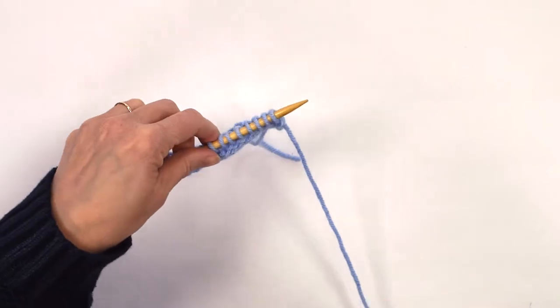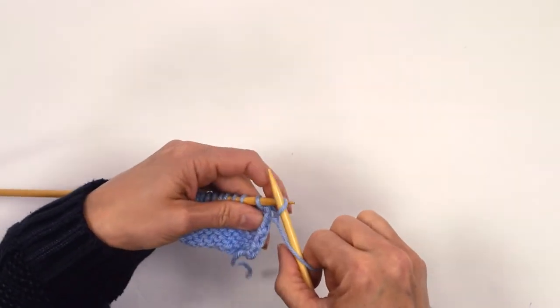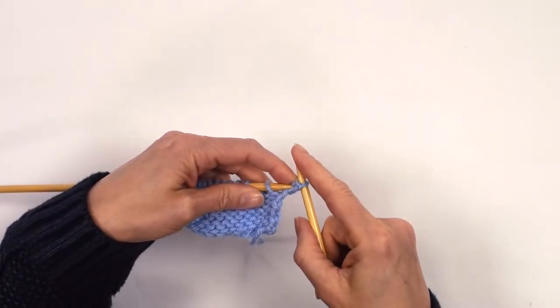The second row is where it gets more interesting. So you purl the first stitch, so that's just a standard purl there.